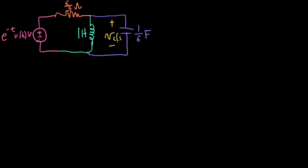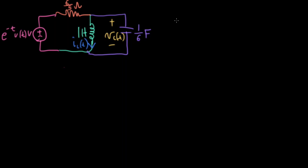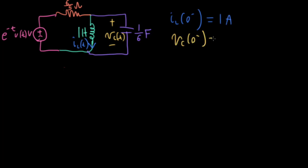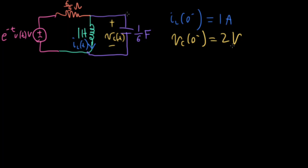Again, these are not very realistic values — 1 Henry is an awful lot of inductance also. But you can tell the professors who created this problem were intending to make the answers come out nicely. We're going to measure the voltage across the capacitor with plus up here and minus down here, and measure the current going down as I_L(t). The pre-initial condition on the current is 1 amp and the pre-initial condition on the voltage is 2 volts.